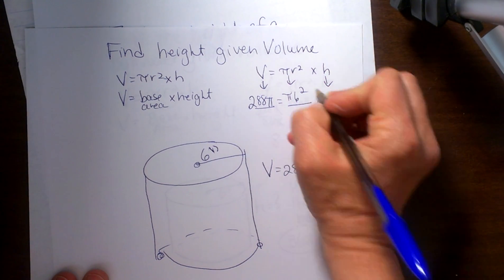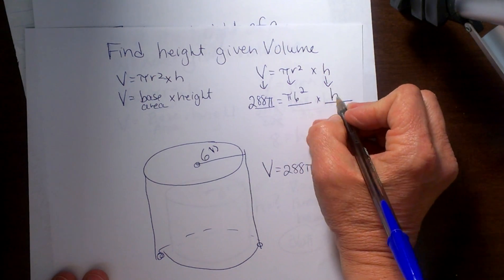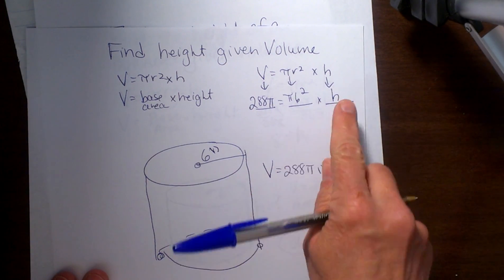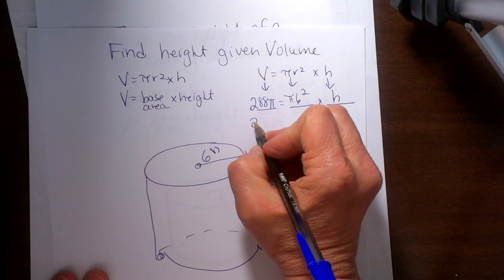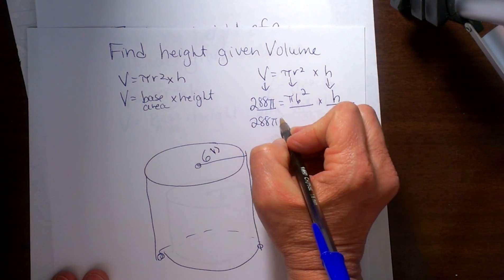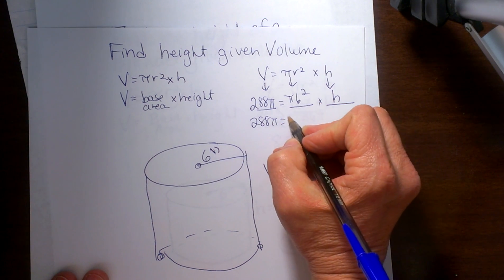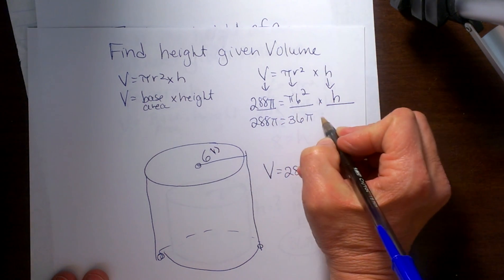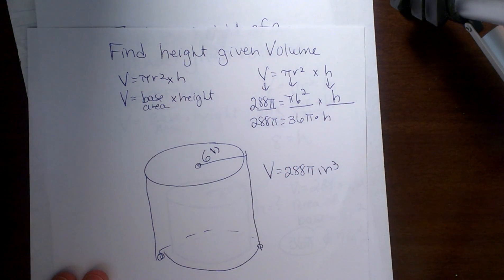So pi times 6 squared and then that leaves me with the unknown variable h. So let's work this out. We have 288 pi to bring down on the left and then 6 squared is 36 pi times our height. So from here I need to get the height by itself.